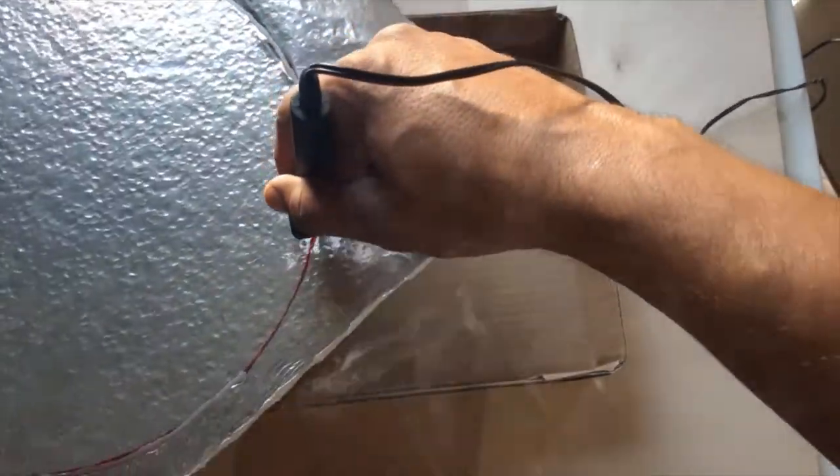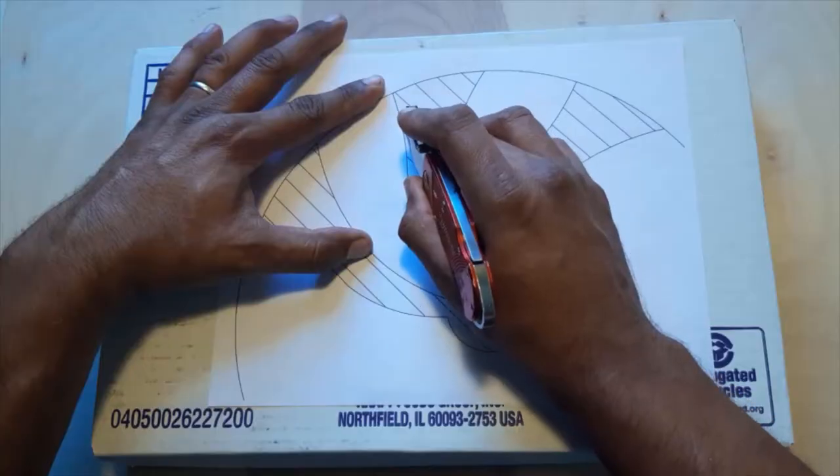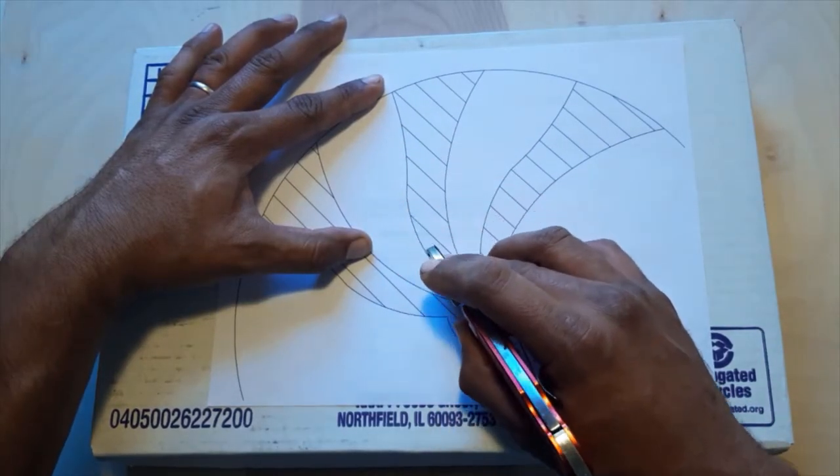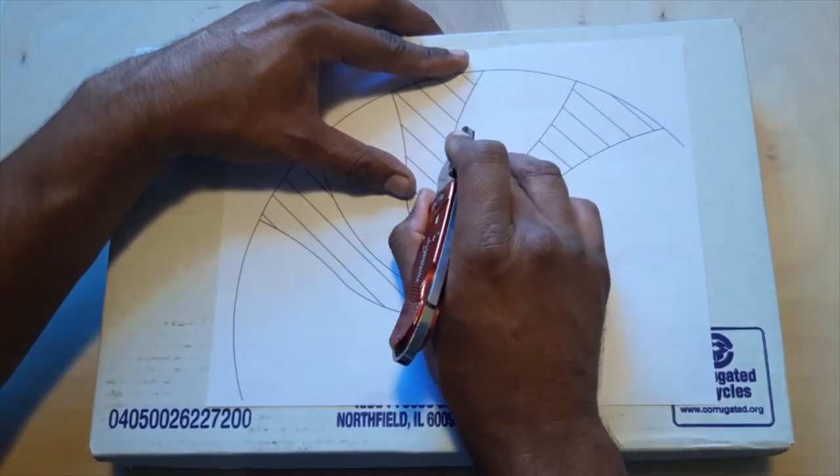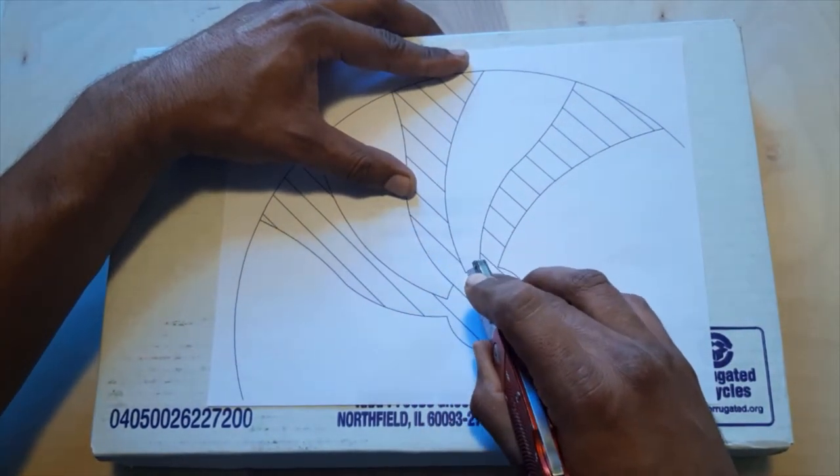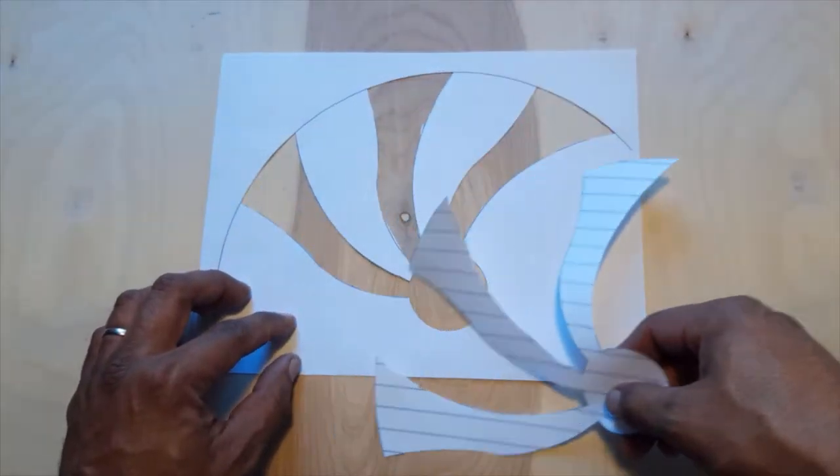Now we need to prepare our second template. We'll be cutting the inside marked area with a sharp knife. An exacto knife will be ideal. This is what the template will look like after cutting the inside.